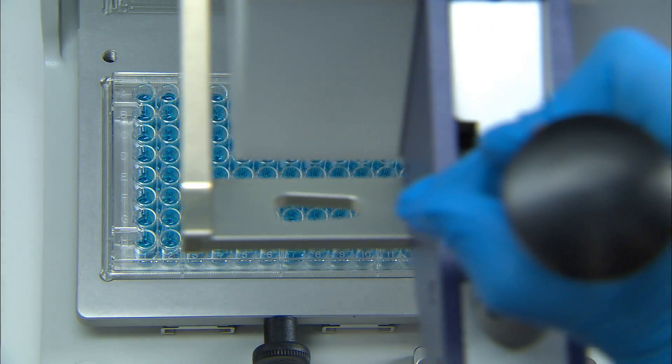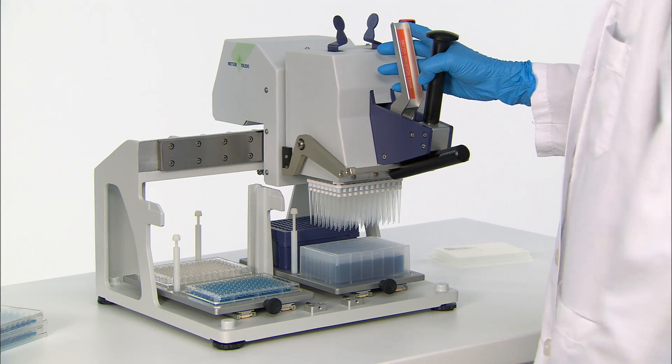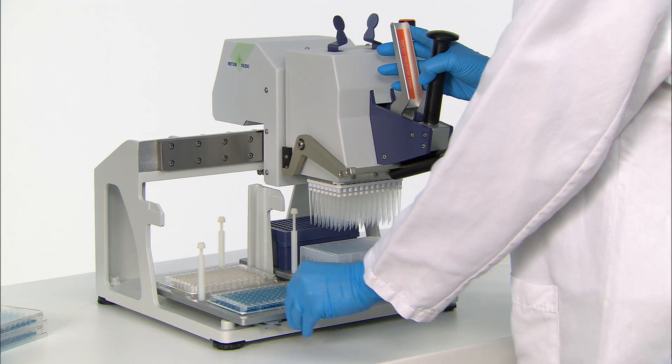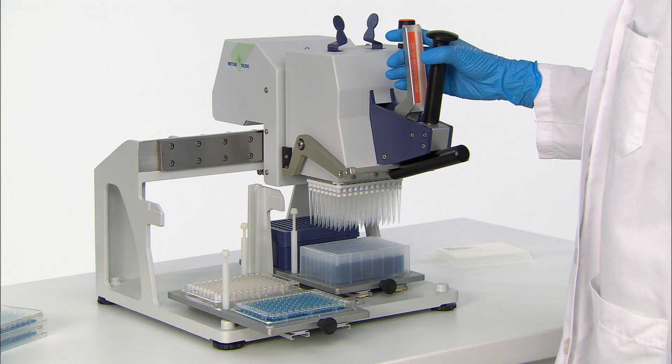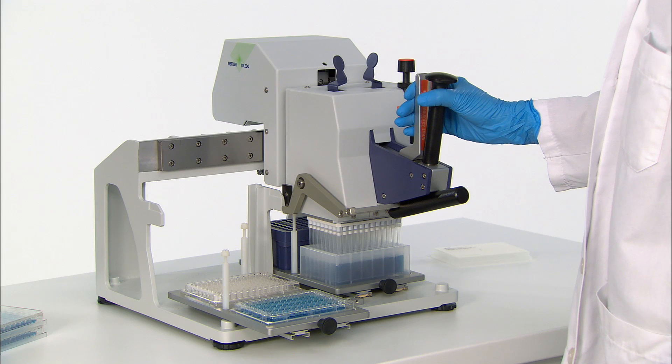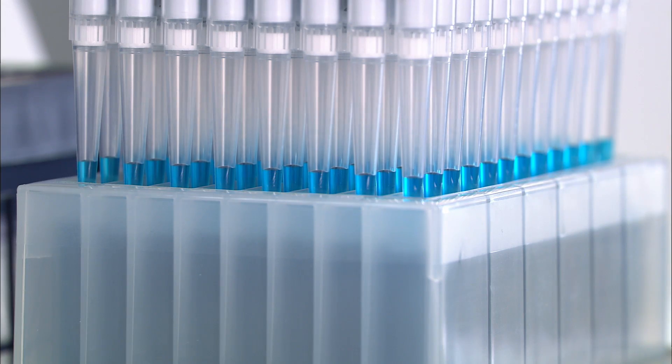The system is now ready to aspirate and dispense the liquid to the second 96 well plate. Move the left tray forward to place the second plate in the dispense position. Observe the absolutely level volumes in all tips.